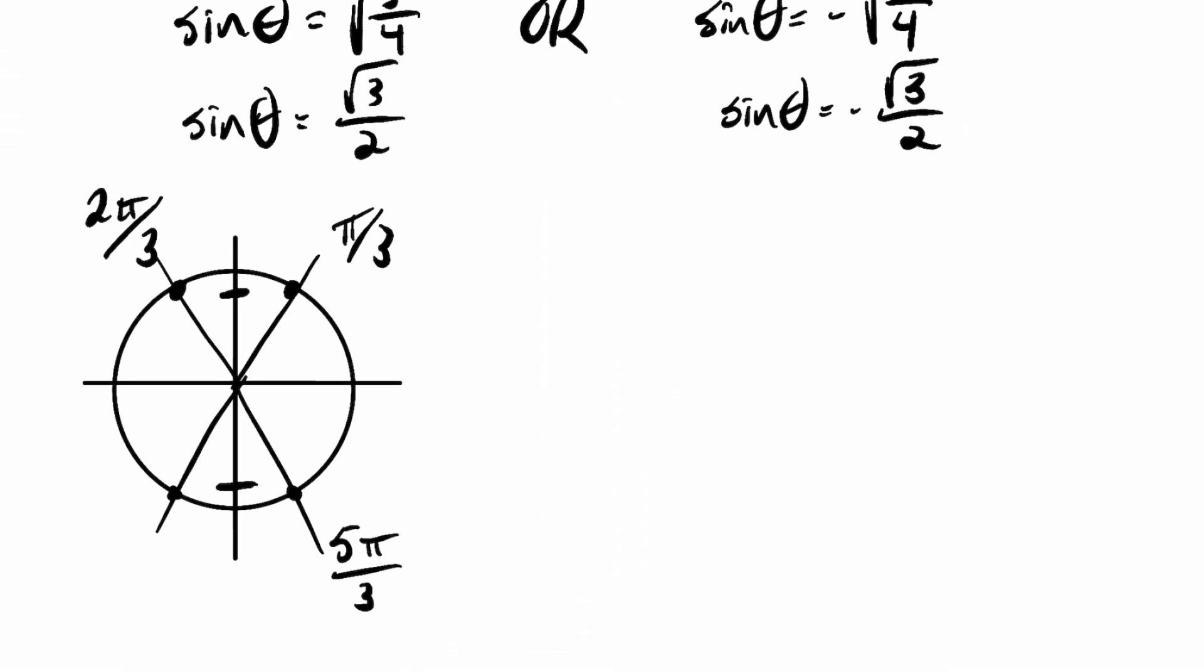Or maybe it would be better if I did this. Maybe this would be a little bit clearer. That's negative 2 pi over 3, but of course we don't want negative values, so I need to add 2 pi to that. Basically that's 4 pi over 3.